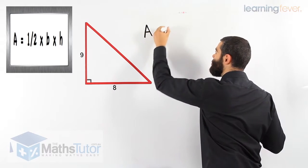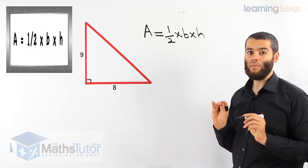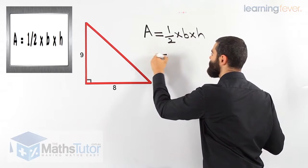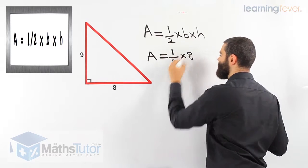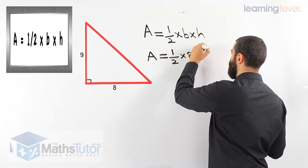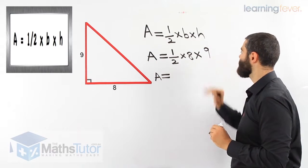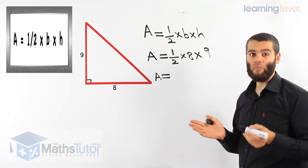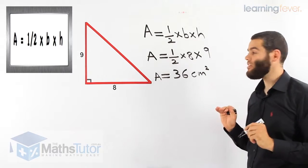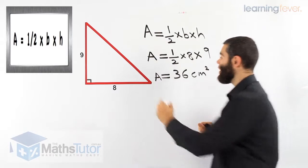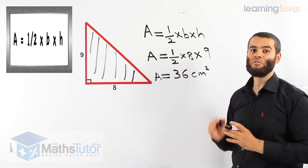Let's use our formula to work it out. A equals half times base times height. Very important to write the formula — you're going to get marked for that. Half times base times height. The base is 8 and the height is 9. So half times 8 times 9: 8 times 9 is 72. Half of 72 is 36. So the area is 36 square centimeters — that's all the space inside this triangle.